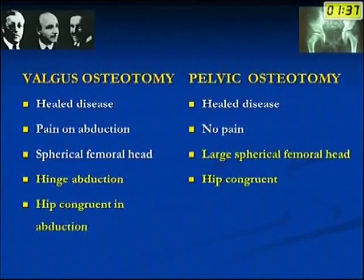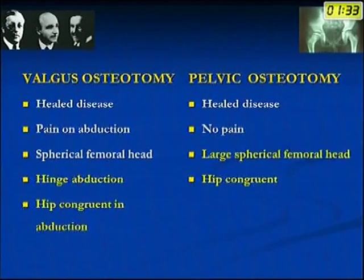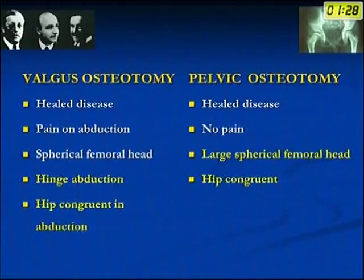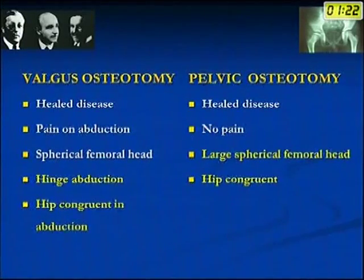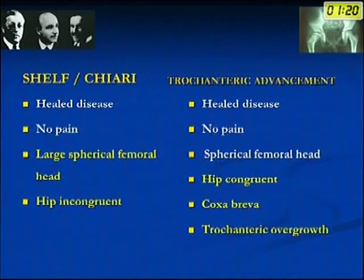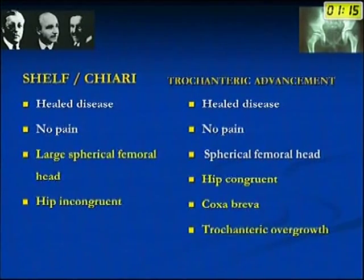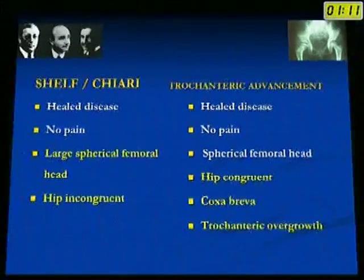Various procedures are available: valgus osteotomy when there is hinge abduction and the hip is congruent in abduction on X-ray and arthrogram; pelvic osteotomy when there is a large spherical femoral head and the hip is congruent; shelf for a large spherical femoral head with incongruent hip; and trochanteric advancement when there is coxa vara and trochanteric overgrowth with a congruent hip.